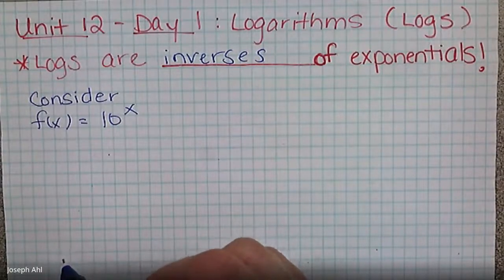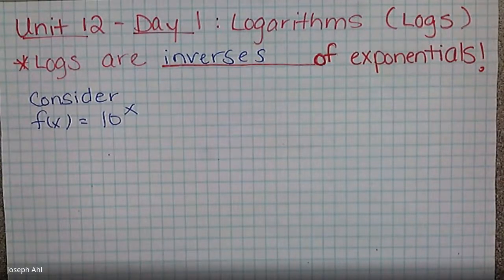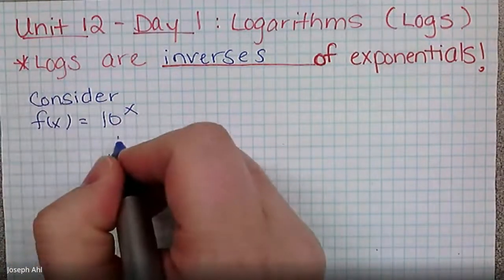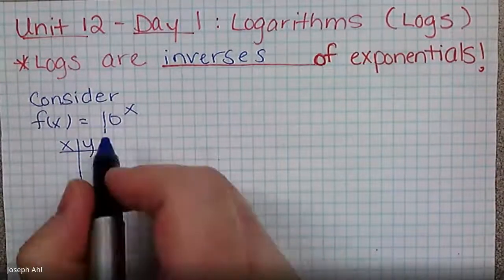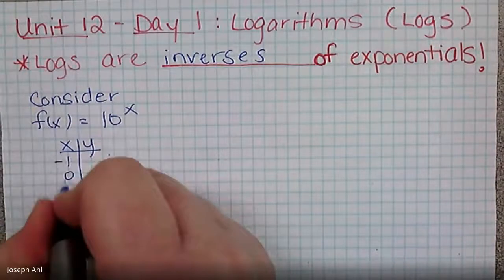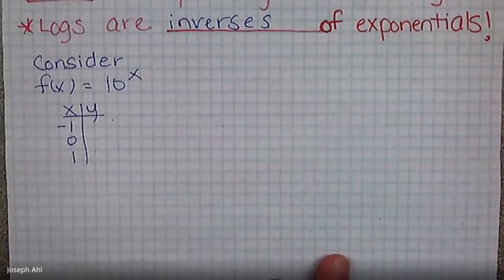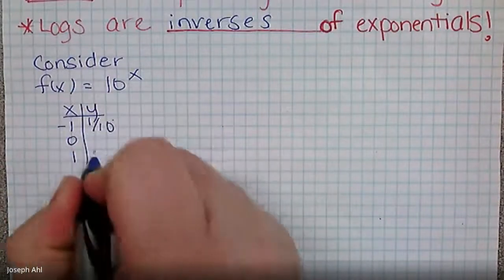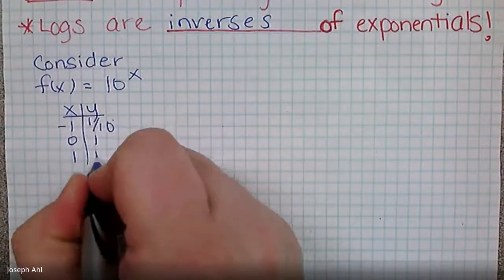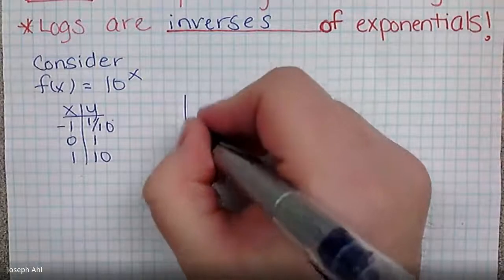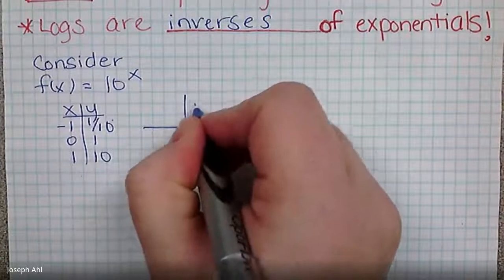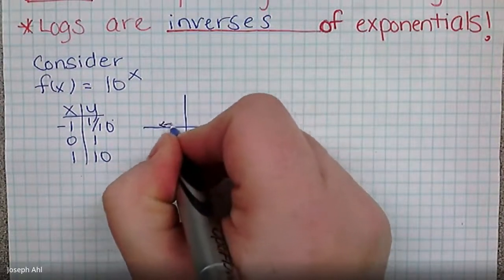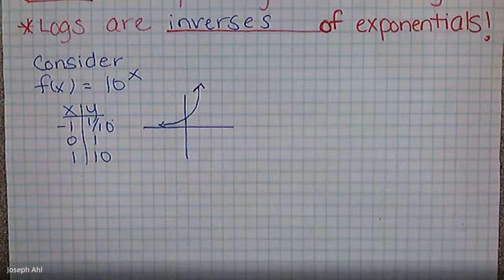In order to get an idea about what logs look like, we're going to make a quick table for the exponential function 10 to the X power. From unit 11, 10 to the X is definitely exponential growth. Picking three points — negative one, zero, and positive one — 10 to the negative first is one tenth, 10 to the zero is one, and 10 to the first is 10. So a quick sketch would have a Y-intercept of one, getting close to Y equals zero and growing really fast on the positive side with that base of 10.